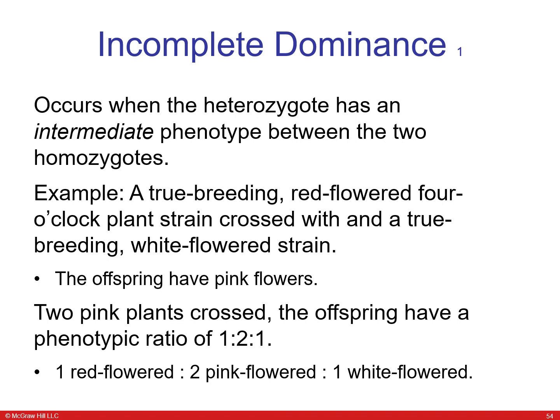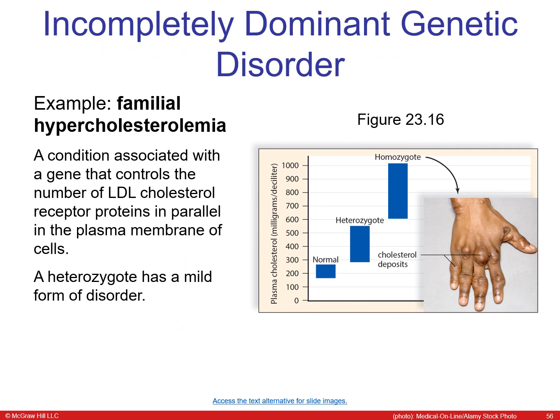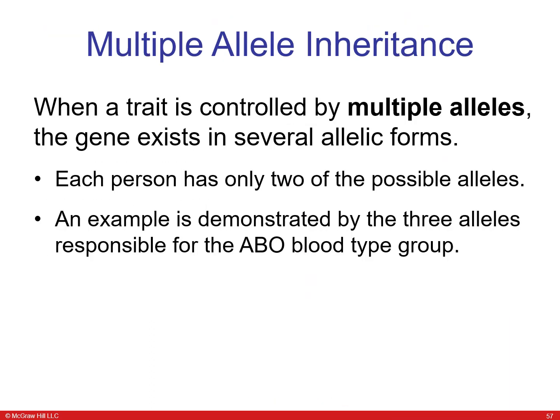Incomplete dominance occurs when the heterozygote has an intermediate phenotype. An example is the four o'clock plant: breeding a true red flower strain with a white flower strain produces offspring with pink flowers. When two pink flowers are bred together, they produce a phenotypic ratio of one to two to one — one red, two pink, and one white flower. An example of an incompletely dominant genetic disorder is familial hypercholesterolemia, which causes increased cholesterol.